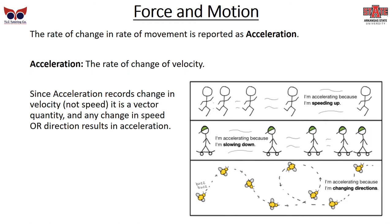The third level is the rate of change in rate of movement — a rate of a rate — called acceleration. Acceleration is the change of velocity (note: velocity, not speed) and is a vector quantity. Any change in speed or direction results in acceleration. Someone speeding up while running or slowing down on a skateboard are both acceleration. Even moving at a steady speed but constantly changing direction — like going into a hard turn on a road — is acceleration, because you're changing direction.